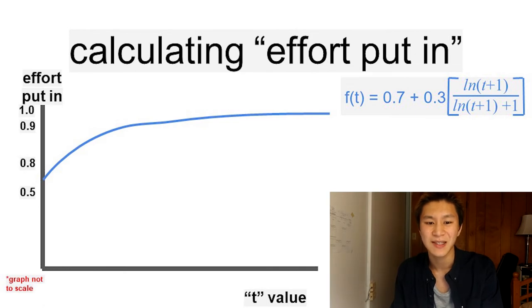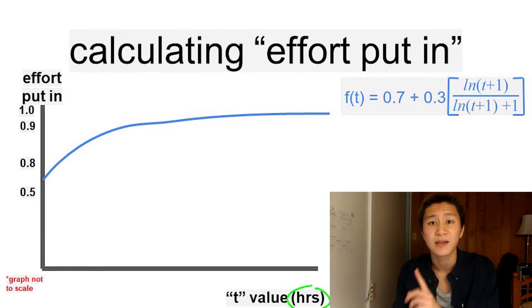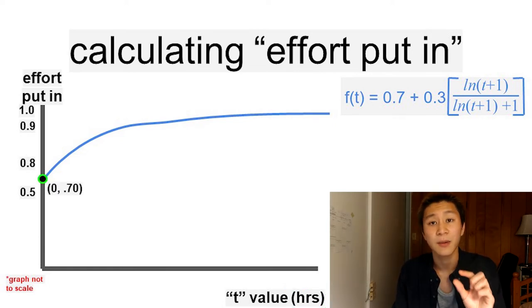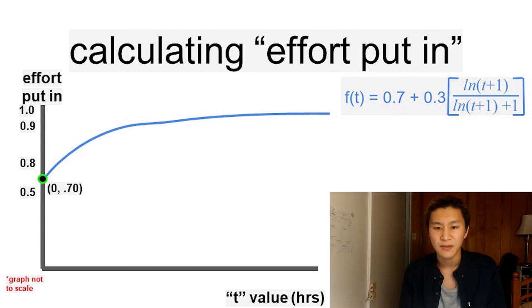This is similar to the expected effort equation, but different in three distinct ways. First, time variable t is measured in hours, not minutes. Secondly, the y-intercept is at 0.7, which means even with no time preparing, we can spontaneously produce an effort of 70%.